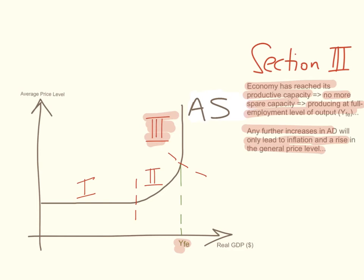Unlike the monetarist new classical model, where monetarists claim wages and prices are flexible and will go up or down to adjust and bring the economy to its long-run equilibrium, Keynesians believe that prices and wages are likely to go up but very unlikely to go down — they are downwardly inflexible. Hence, they divide the aggregate supply curve into three sections based on the level of spare capacity and how close or far the economy is from its full employment level of output.